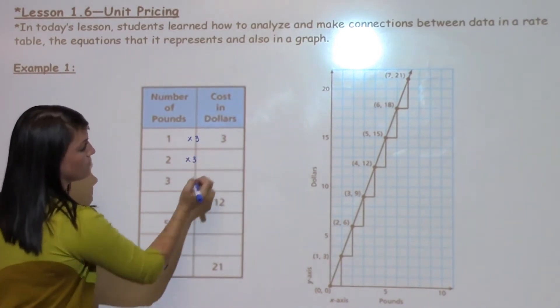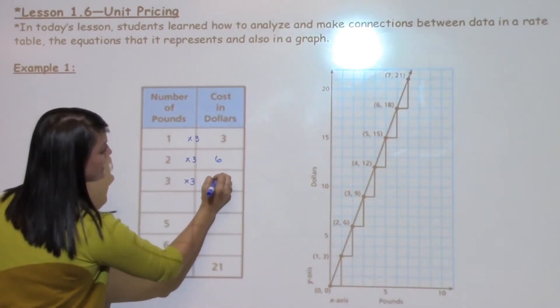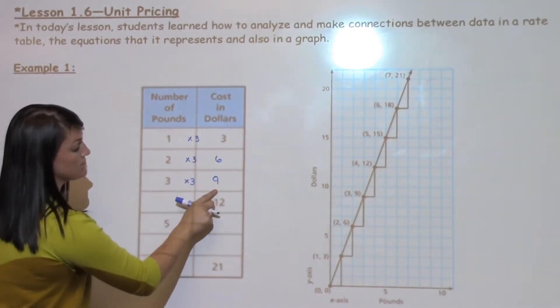So two times three would give me six. Two pounds would cost me $6. Three times three would give me nine. Three pounds would cost me $9.